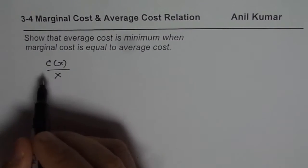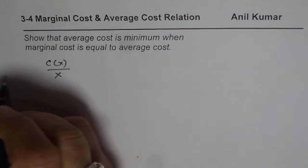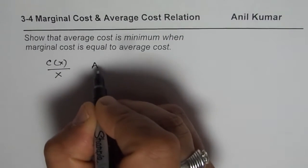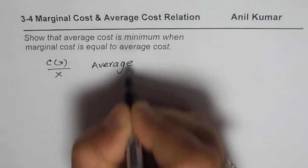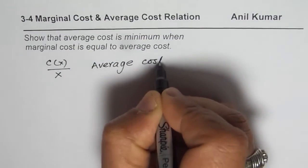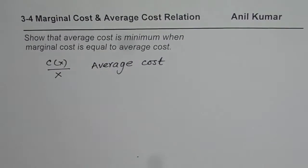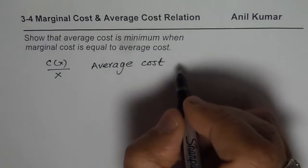Now if we take derivative of this function. So that is the average cost. So this is average cost. So c(x) divided by x. c(x) is the total cost and x is the total number of items produced. So it makes sense.